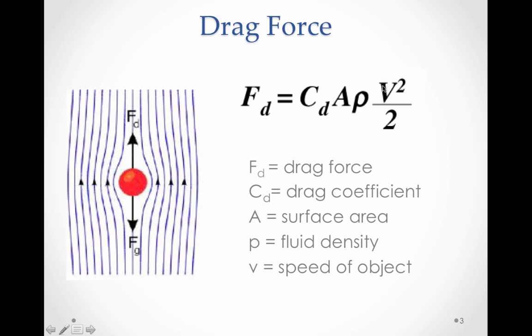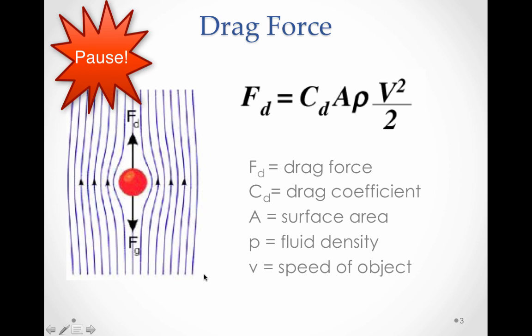The V is the speed of the object; in the last example, that would be the skydiver speed, and notice that that's squared and divided by 2. So here are all the factors that determine the drag force, which determines ultimately the speed of the object falling through the air.